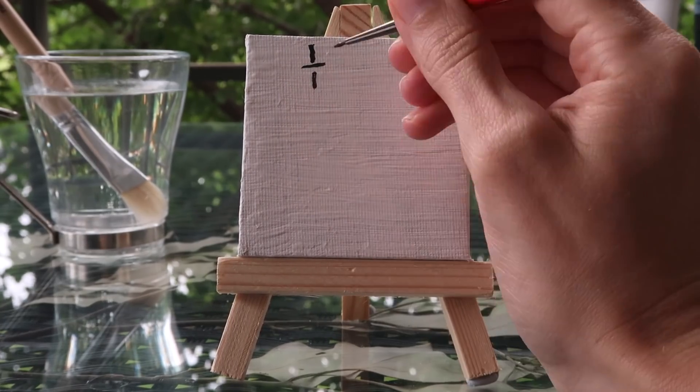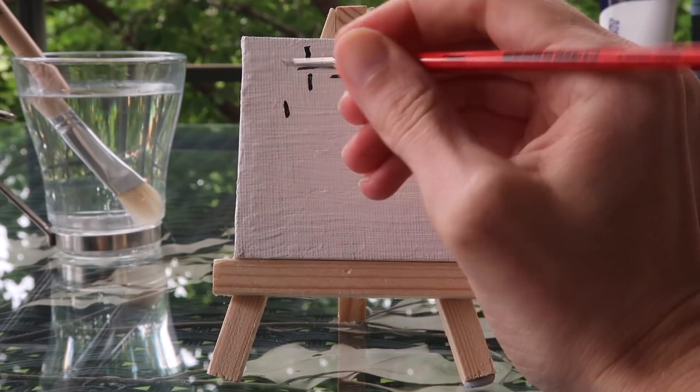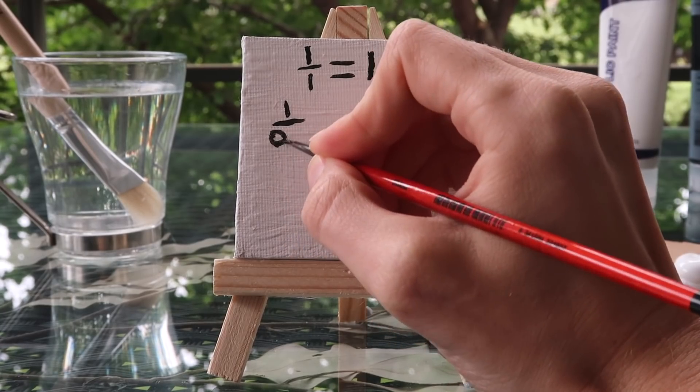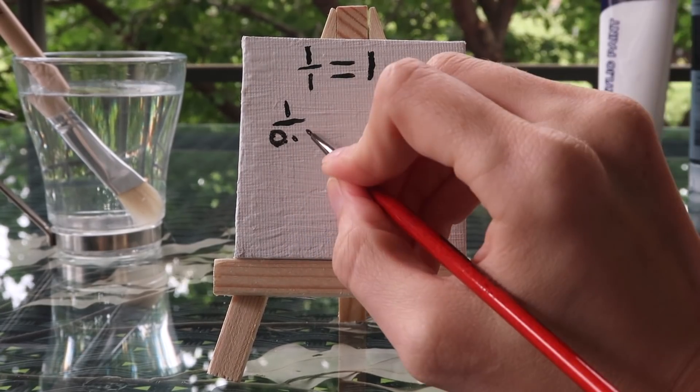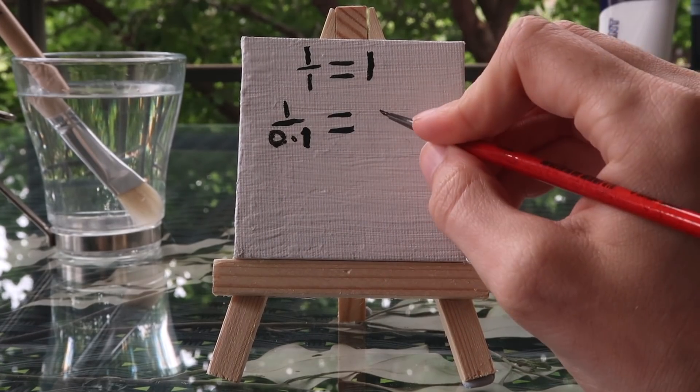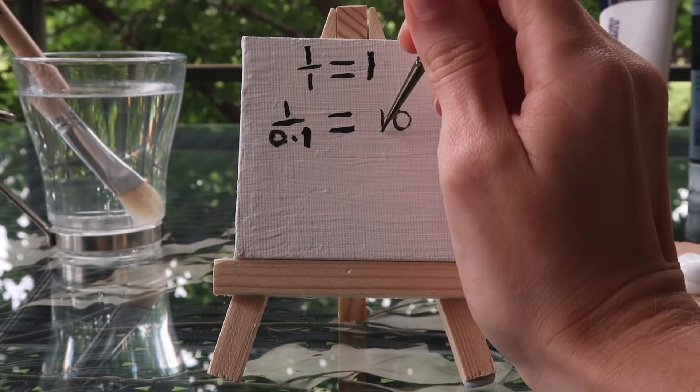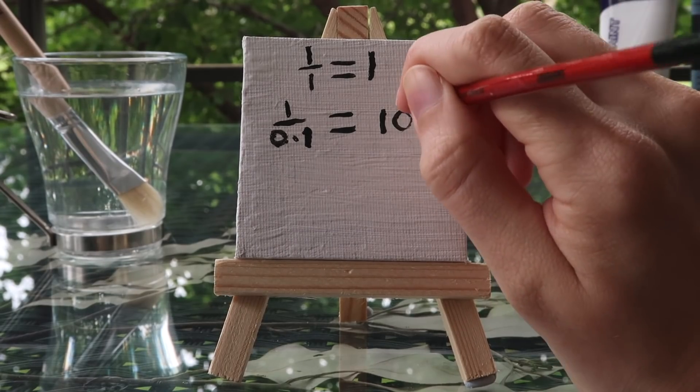1 divided by 1 is 1. 1 divided by 0.1 means how many times is the decimal 0.1 contained within the number 1. The answer is 10 times.